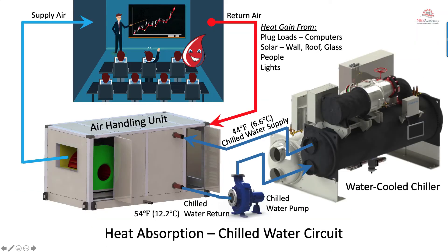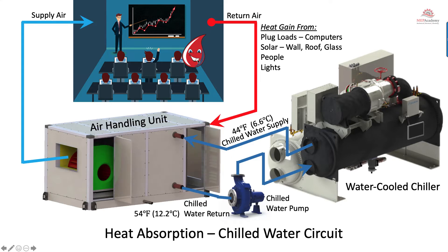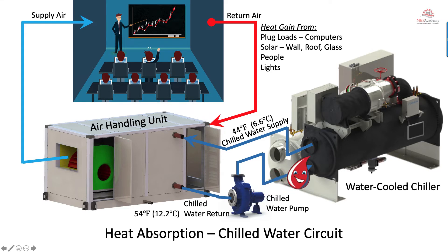To recap: heat comes from people, plug loads like computers or any equipment generating heat, lighting, and solar — whether through windows or conducted through walls from outside air. That heat is generated in the space and we want to remove it. It's taken through the return air duct into the air handler, passed into the chilled water system, and from there taken into the chiller.